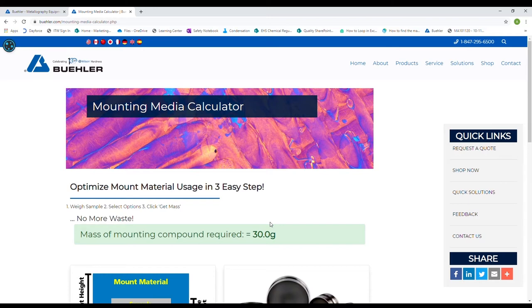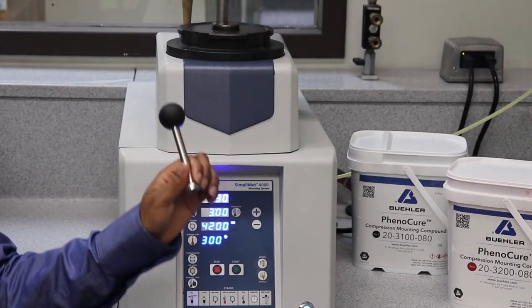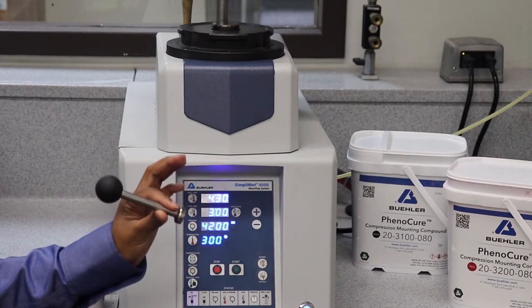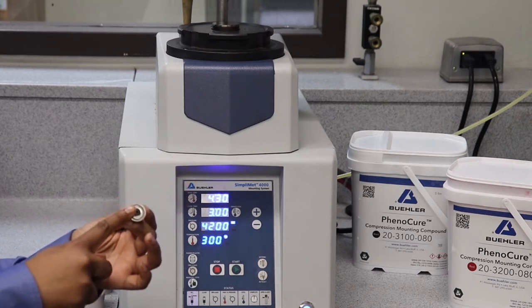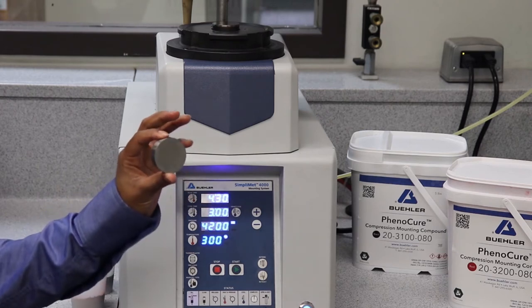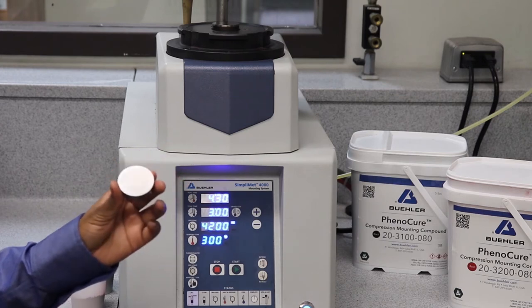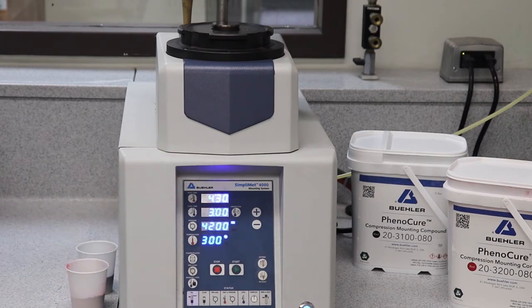Now let's get started mounting the samples. These are the two tools you're going to need. This one is a spacer replacer - it's a bar with a magnet at the end. And then this is the spacer itself. This is going to create a fake lower ram that you're going to put the second sample on top of.